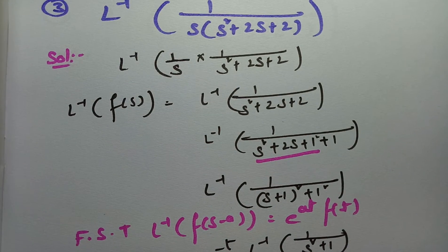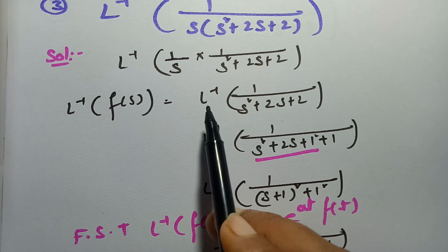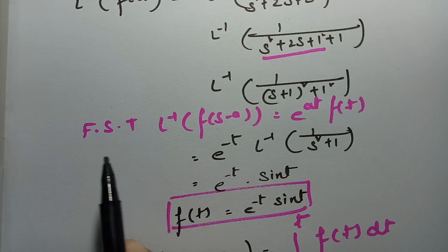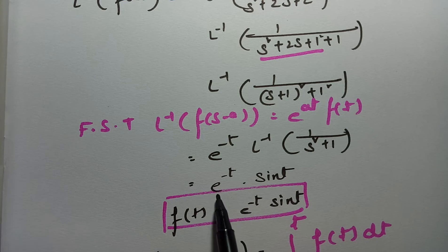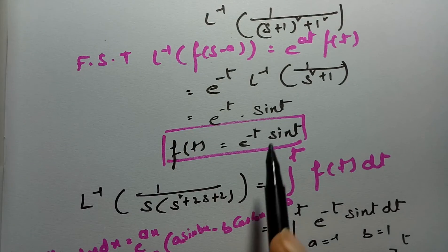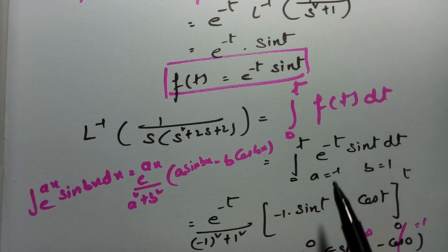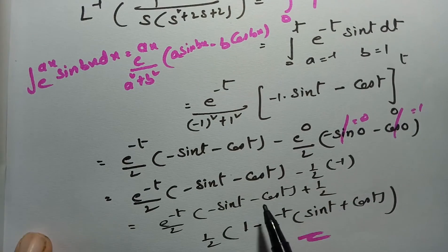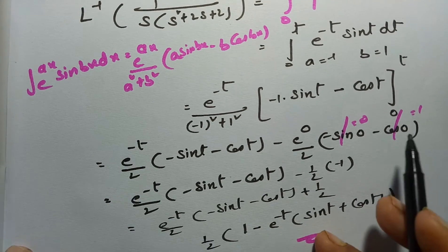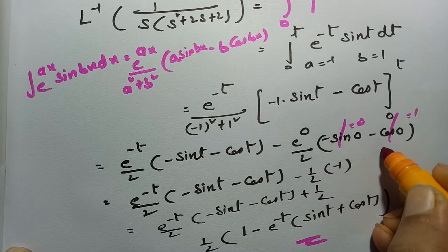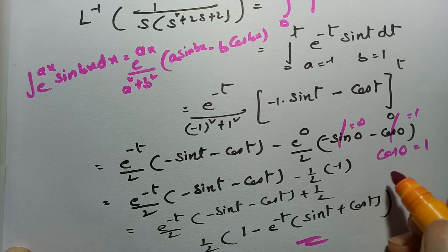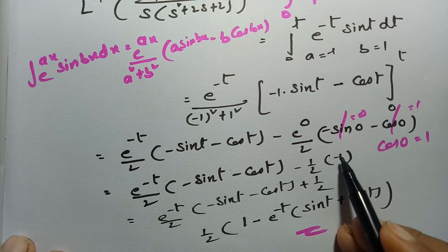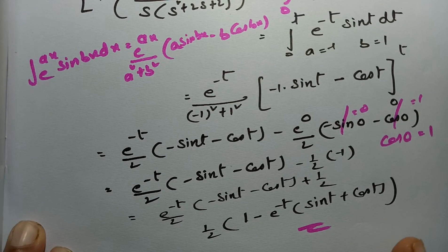To summarize this model: I took F(s) = 1/(s²+2s+2) and rewrote it as (s+1)²+1. Applying the first shifting theorem gave f(t) = e^{−t}·sin(t). Since F(s) is divided by s once, I applied the division theorem and integrated once using the formula for e^{ax}·sin(bx). After substituting upper and lower limits — noting cos(0) = 1 — and simplifying, I obtained the final answer (1/2)(1 − e^{−t}(sin(t) + cos(t))).